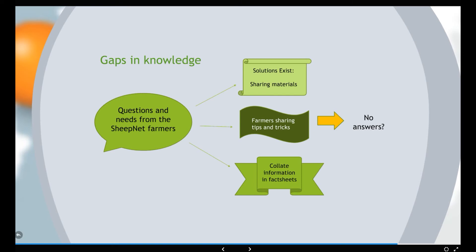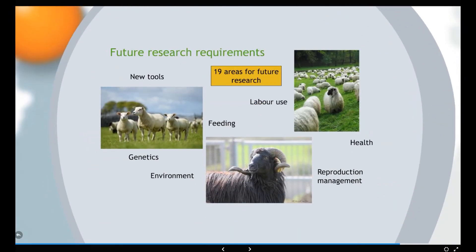But there were still some questions for which we did not find any answers. So those are the things that we think are the future research requirements — places where perhaps we need more information. We found 19 different questions. I think there were 60 or 70 questions that were asked by our farmers, and 19 of those we didn't have enough information to be certain that we had a solution. Those are areas where we think we should be looking for more information, and they weren't clustered in one area — they were across the piece.